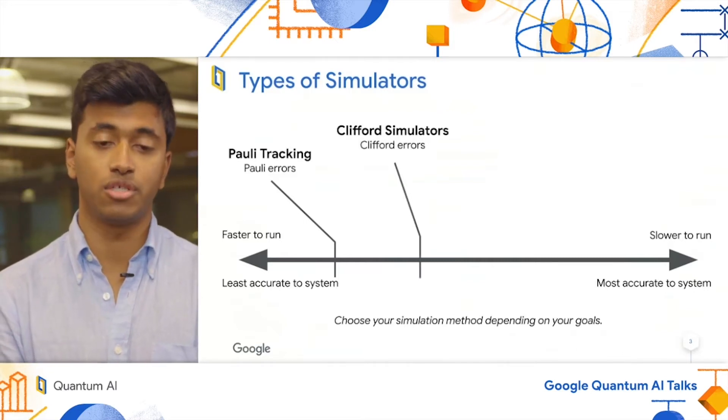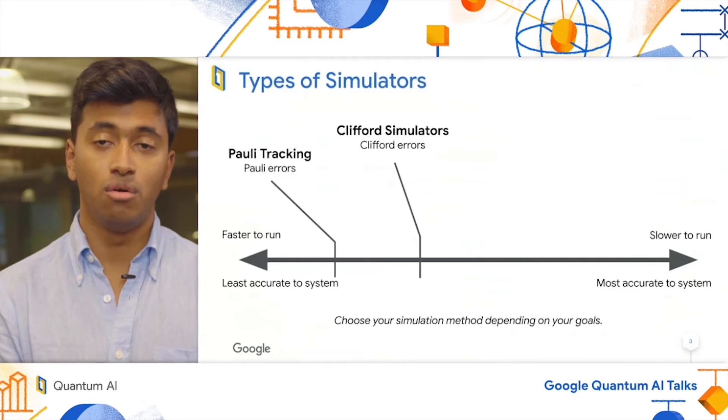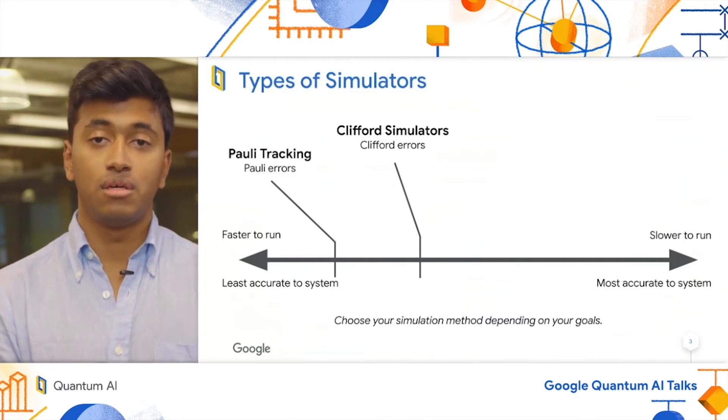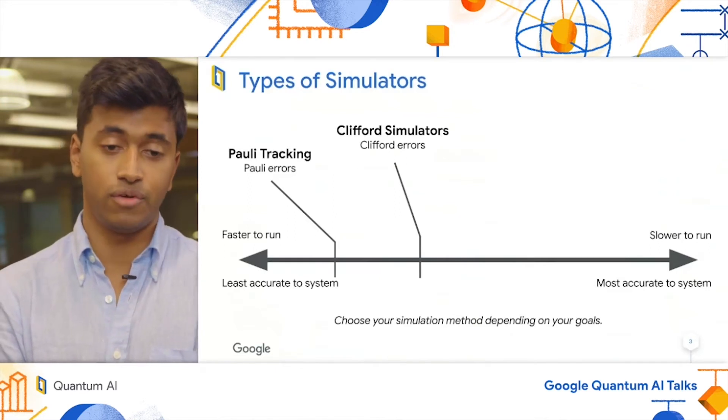Second, we have Clifford simulations. These simulations are essentially the same as the first step of the Pauli-tracking simulation, repeated over and over again, where the errors are resampled after each shot. These are slightly slower than the Pauli-tracking simulation, allowing you to look at a slightly wider set of errors, all of the Clifford gates.